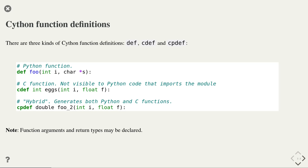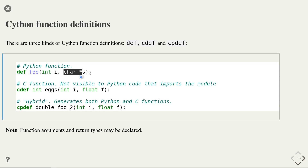Within a Cython module, Python functions and C functions can call each other freely, but only Python functions can be called from outside the module. So any function that you want to export from your Cython module, you have to declare it as a Python function using def. The final keyword is cpdef. It is a hybrid function that generates both a C version that is called when possible for speed performance reasons, but it also generates a Python version that can be called from outside the Cython module. When defining the function, you can now specify the type of the input parameters.